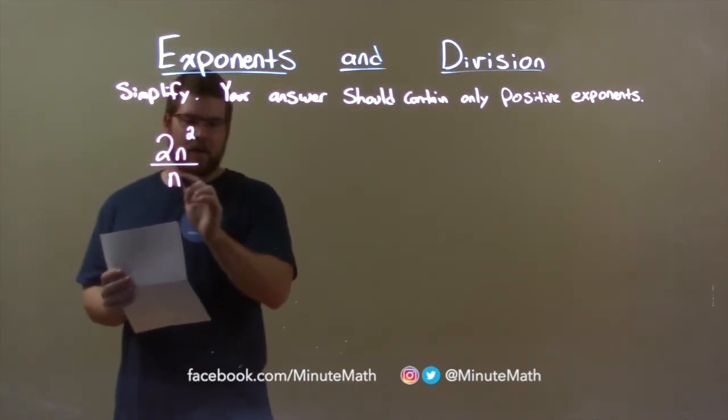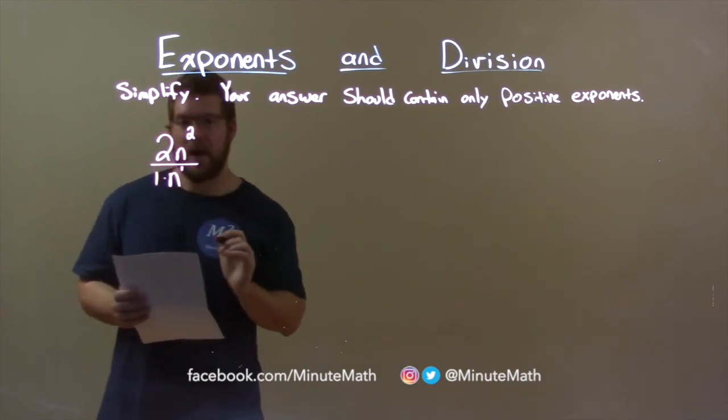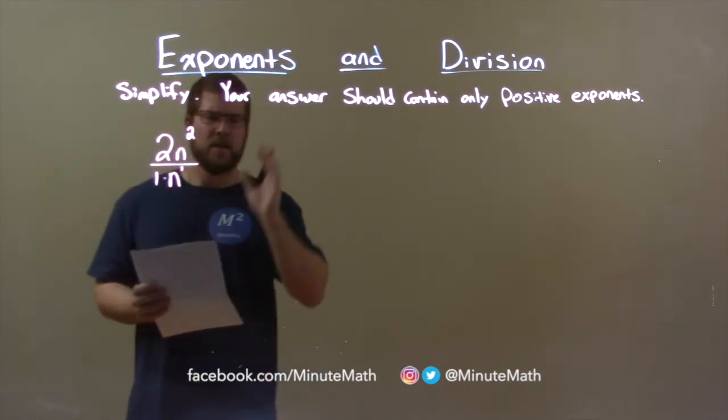Well, the denominator here has two things that aren't written. Remember, there's multiplied by 1 down there, and we have n to the first power. The one is not written. Just keep in mind.